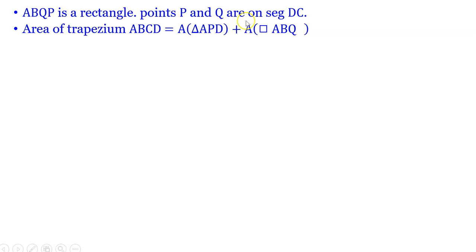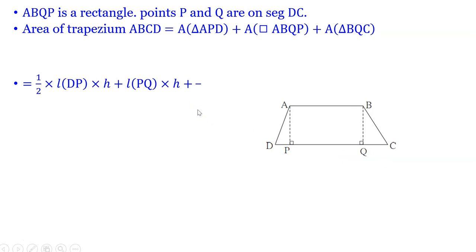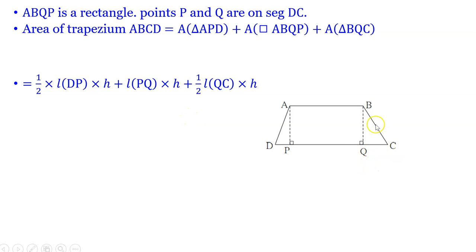Since points P and Q are on segment DC, the area of trapezium ABCD equals the area of triangle APD plus the area of rectangle ABQP plus the area of triangle BQC. The area of triangle APD is 1/2 × DP × H. The area of rectangle ABQP is PQ × H (length into breadth). And the area of triangle BQC is 1/2 × QC × H.